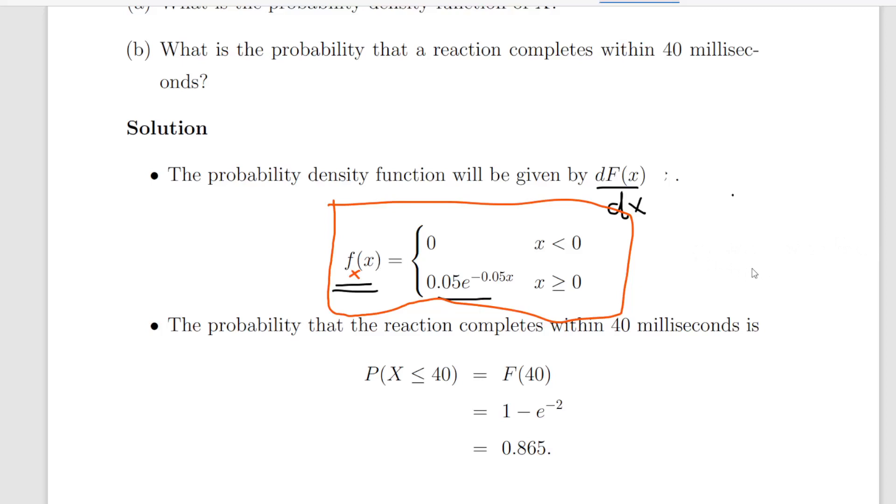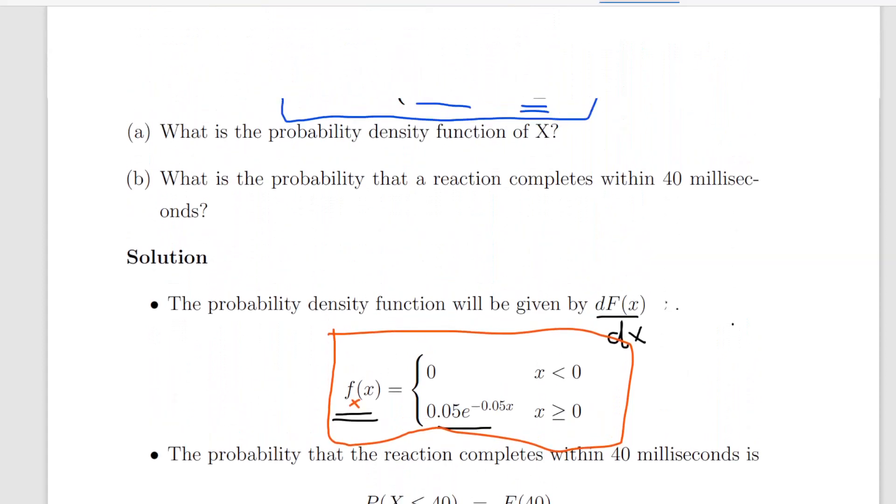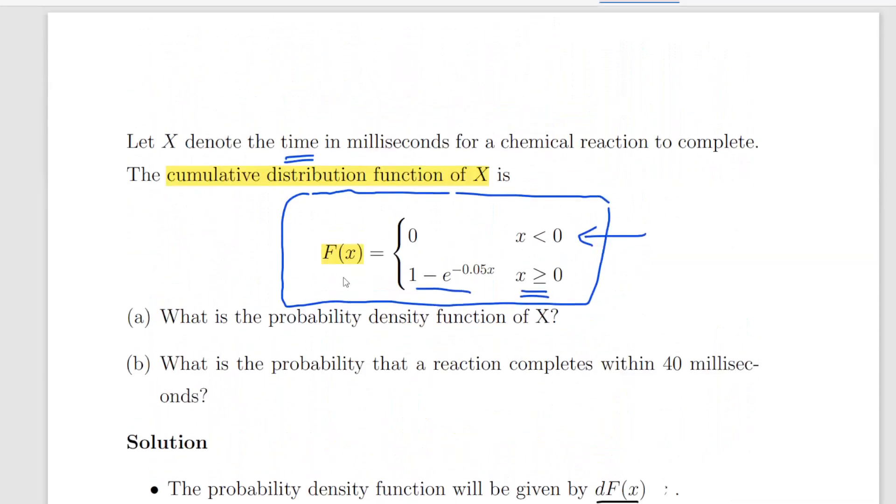The second question actually is a straightforward use of the cumulative distribution function. What is the probability that reaction will complete within 40 milliseconds? So what we're asked for is the probability of X less than or equal to 40 which is the cumulative distribution of 40. So let's go up here. We use this expression here because x is greater than 0.